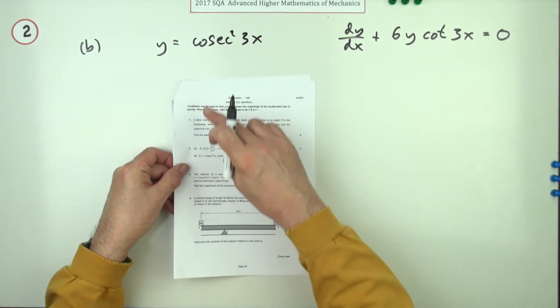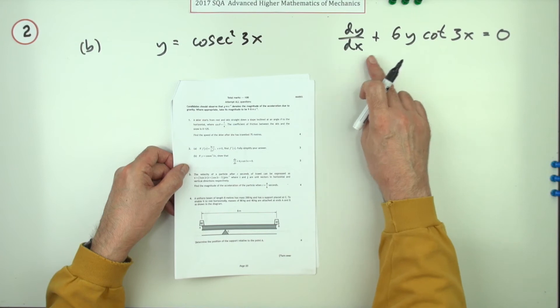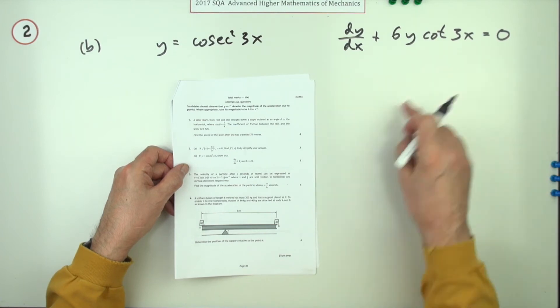And part b, if y equals cosec x squared 3x, show that dy by dx plus 6y cot 3x is 0 for the same three marks as the first bit.